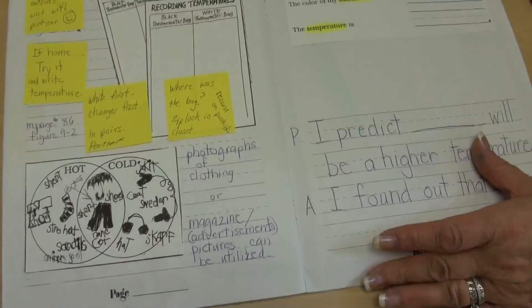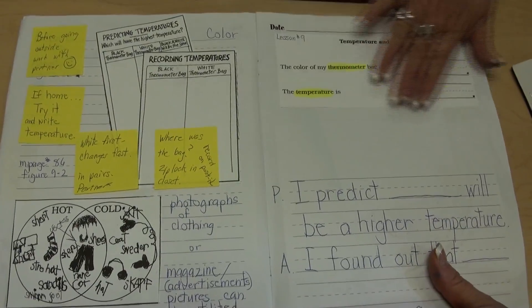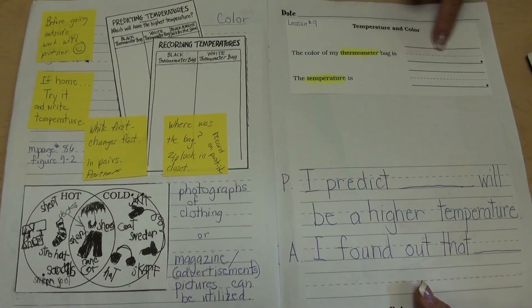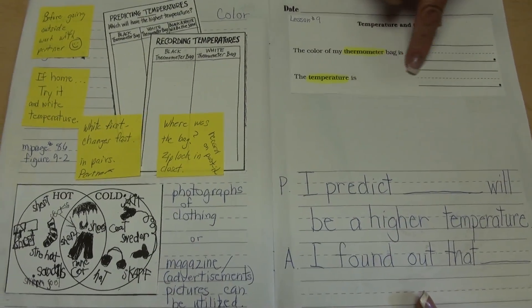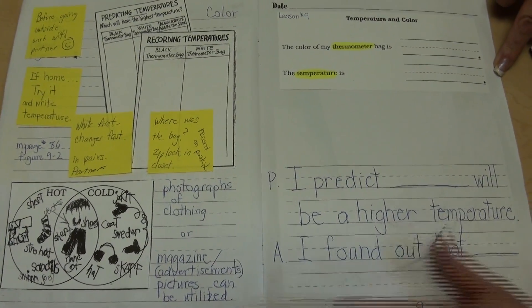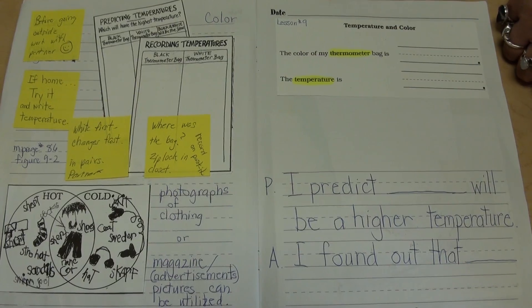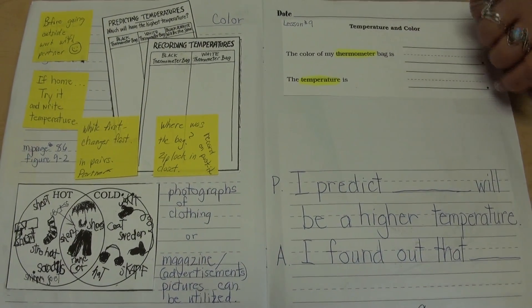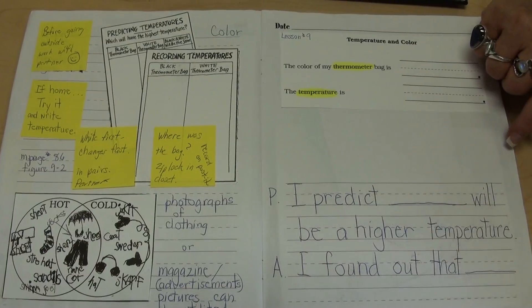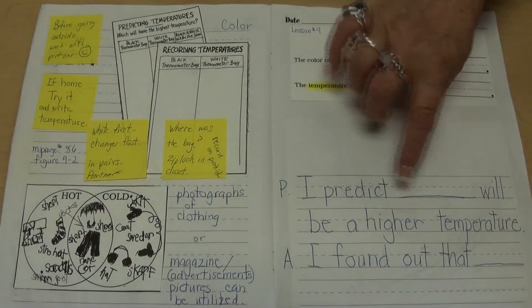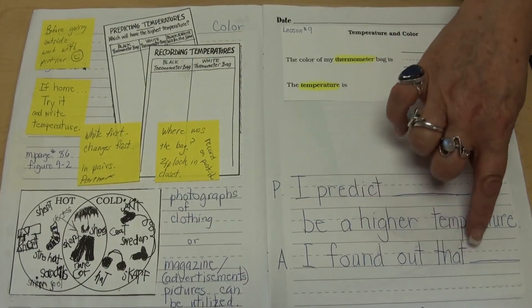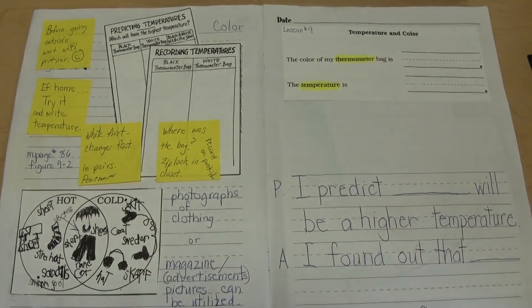For the notebook page, we use part of the Blackline Master that says, the color of my thermometer bag is, and the temperature is. And at the bottom, the children can use a sentence starter with a blank. They can either write it by themselves, or this can be generated with a computer. I predict blank to be a higher temperature. I found out that, and whatever they find out.